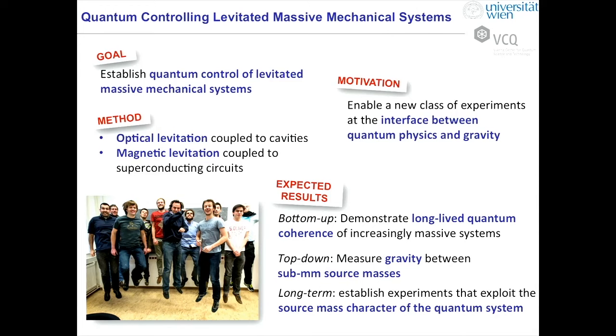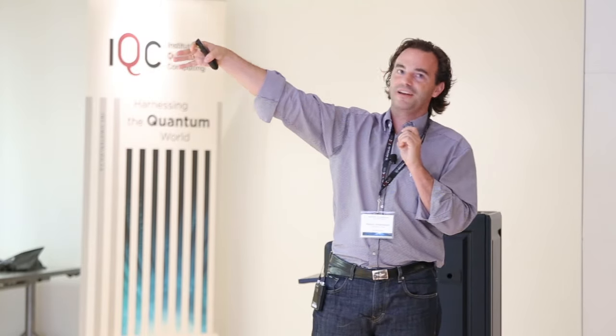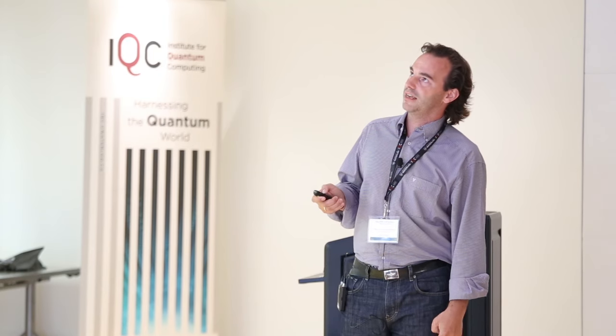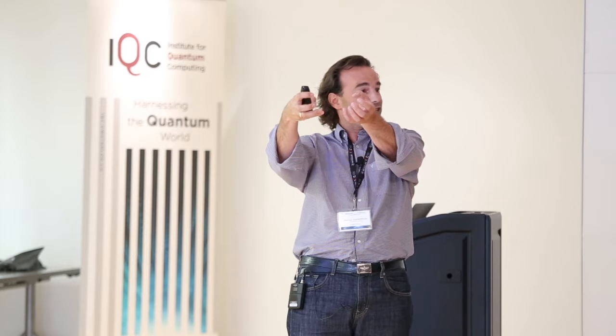In summary, what I wanted to convey is that the goal is to establish quantum control of levitated massive mechanical systems. The methods we use include optical and magnetic levitation. The long-term motivation is to enable a new class of experiments where you push the mass of a quantum system to the point that it may act as a gravitational source mass. We take a bottom-up approach to demonstrate long-lived coherence of increasingly massive systems, and a top-down approach to establish gravitational coupling on large scales and make it smaller, hopefully bringing those two things together. A big thank you to my group.